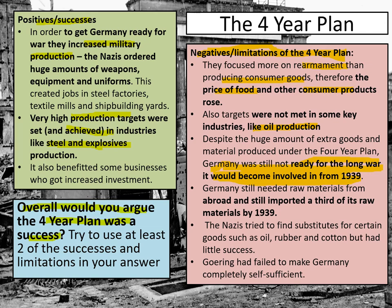Crucially, Germany still imported a third of their raw materials by 1939. They had wanted to be completely self-sufficient, but still importing a third of raw materials shows there was some progress, but it was definitely not the complete self-sufficiency they intended. Pause here and answer the question about whether the Four-Year Plan was a success, using at least two successes and two limitations, written in your own words.